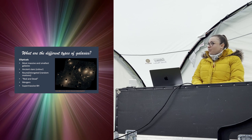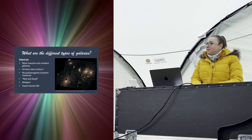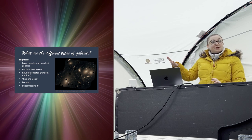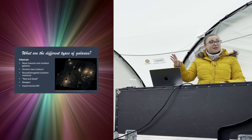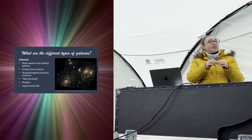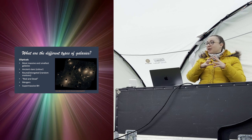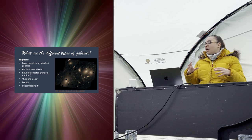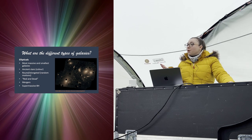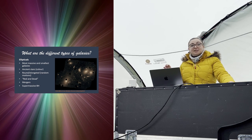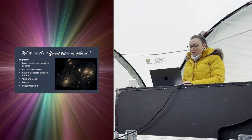Looking at elliptical galaxies, you can see they're brighter in the center — more stars concentrated in the middle — and then fewer stars as we go out to the edges, where they slowly fade away. We believe that like all galaxies, elliptical galaxies have supermassive black holes at their centers, around which all the stars and everything are orbiting.